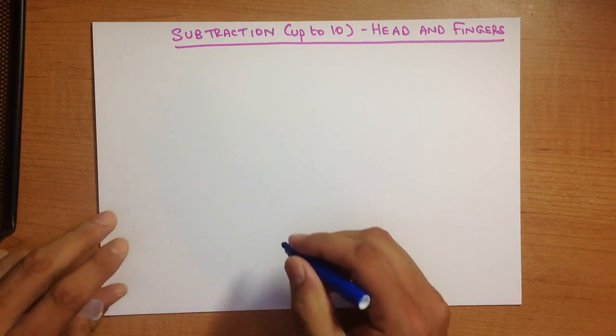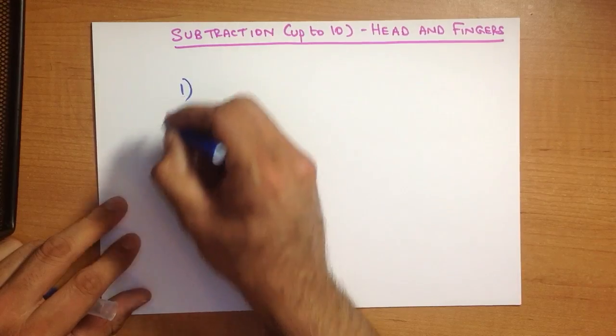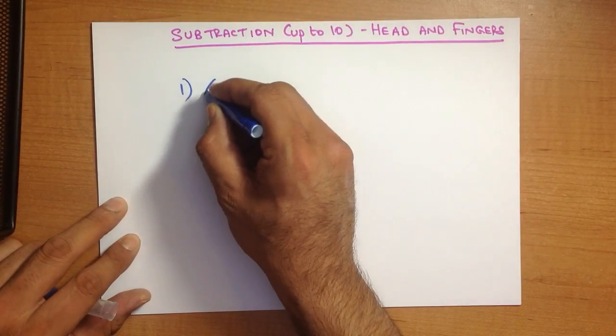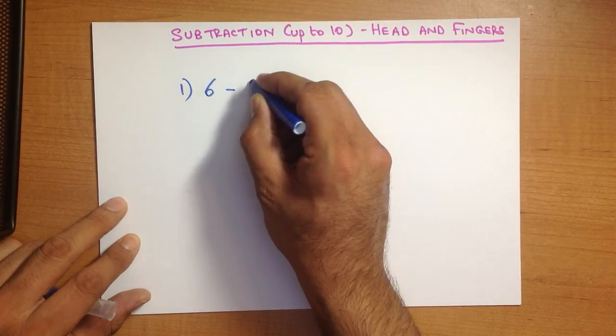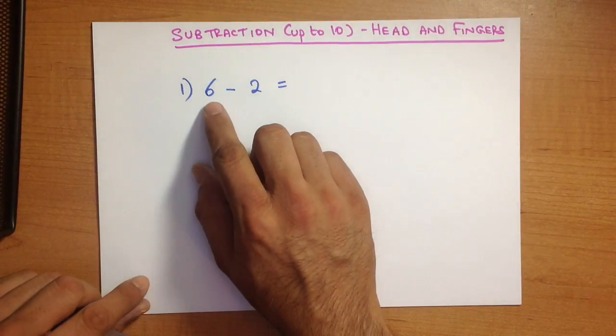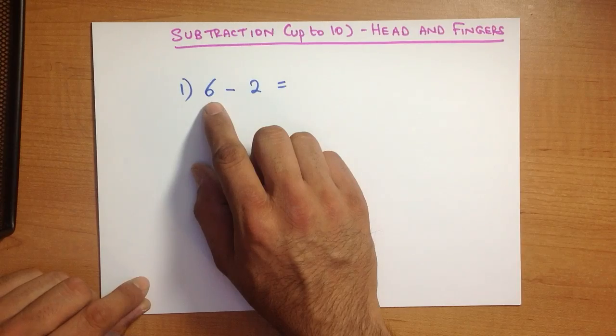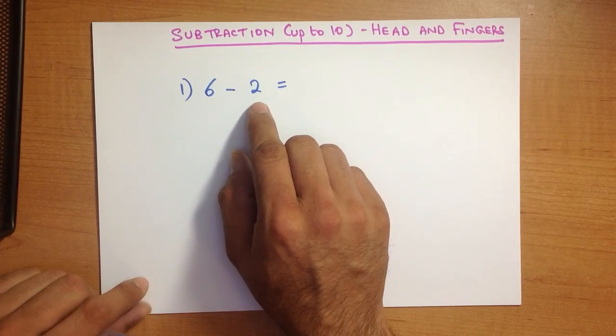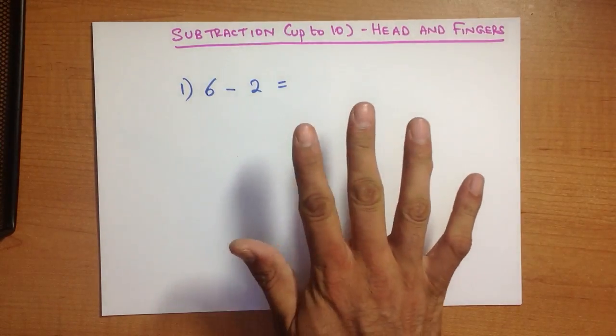So let's work through an example. What is 6 minus 2? What we do here is that the first number we say is on our head. The second number we use our fingers.